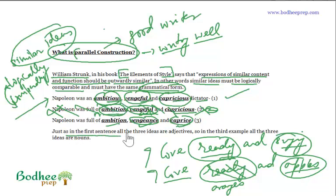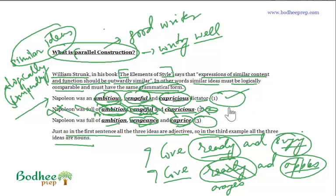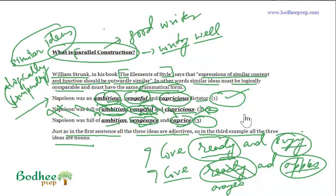Just as in the first sentence all three ideas are adjectives, in the correct version all three ideas should be nouns. Either you have all three adjectives — 'ambitious, vengeful, and capricious' — or all three nouns — 'ambition, vengeance, and capriciousness' — but not a mix. A mix makes the sentence unparallel. In the next video we will look at very good examples of parallel construction and see what kinds of things typically appear in parallel.